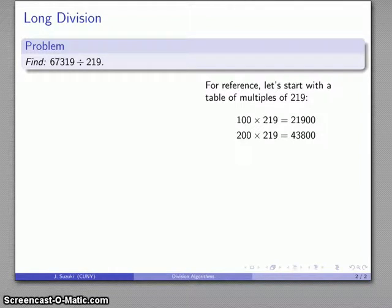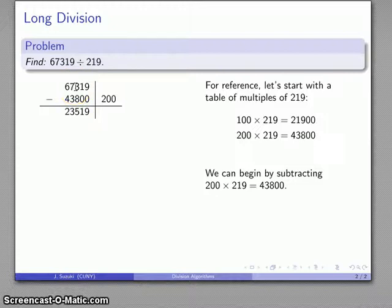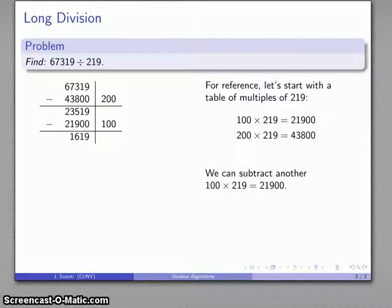This gives me a good starting point. I'll subtract 200 times 219, which is 43,800, from my dividend. Here's what I have left over. A quick comparison with my table shows I can subtract another 100 times 219, taking me down to 1,619.